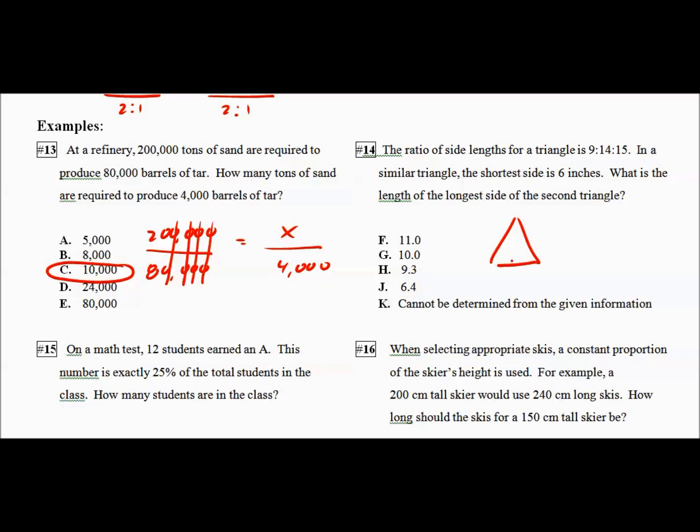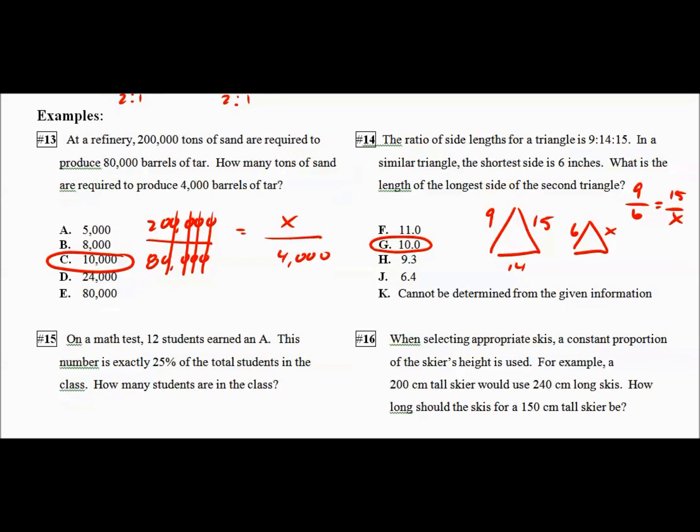I like to draw two triangles. Makes it a little bit easier to see. They don't have to be to scale. I want the longest side. So I'll go 9 to 6 equals 15 to X. Cross multiply and solve. 12, 10. Again, I would never pick cannot be determined unless I am absolutely positively sure.